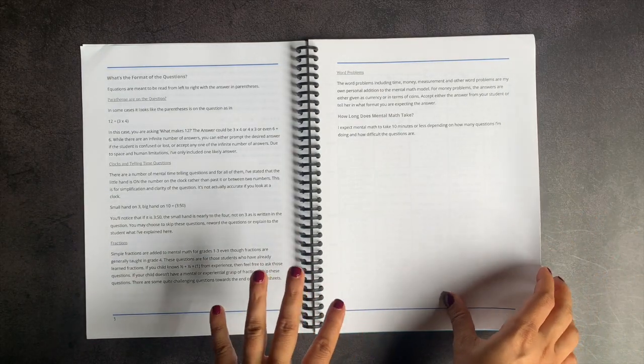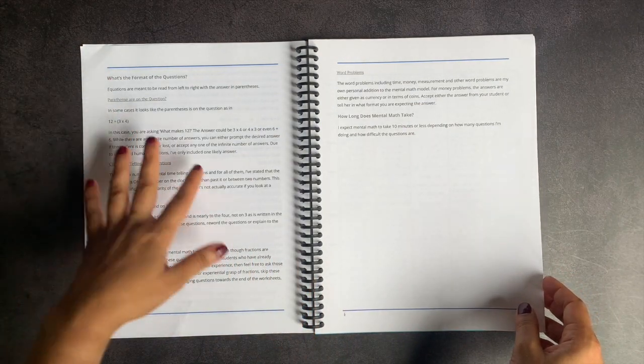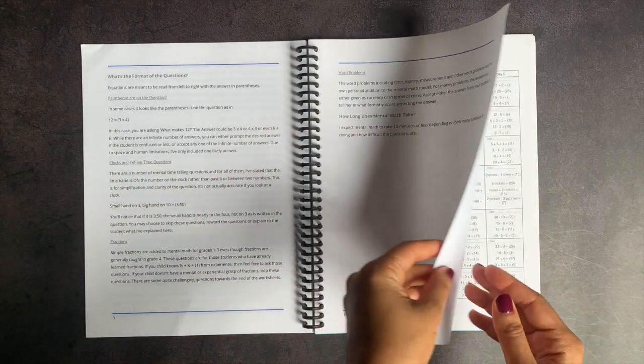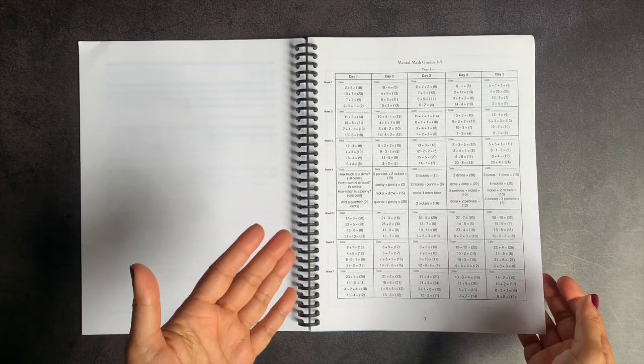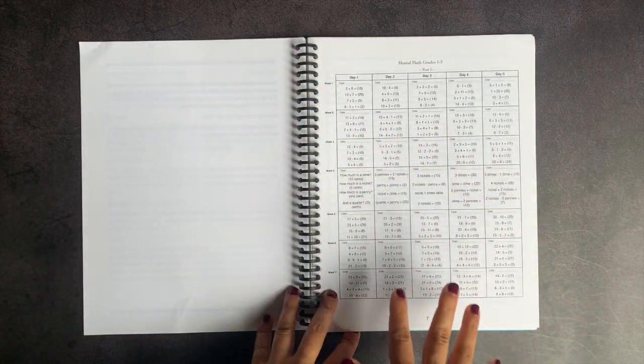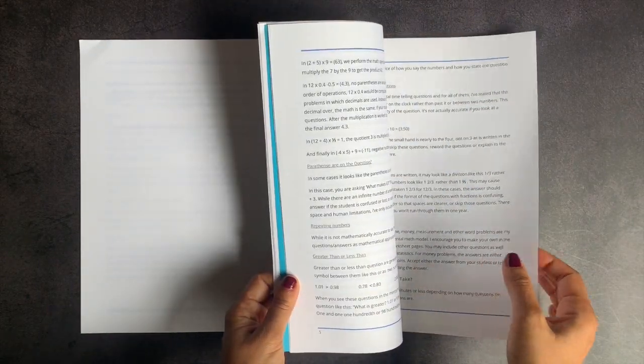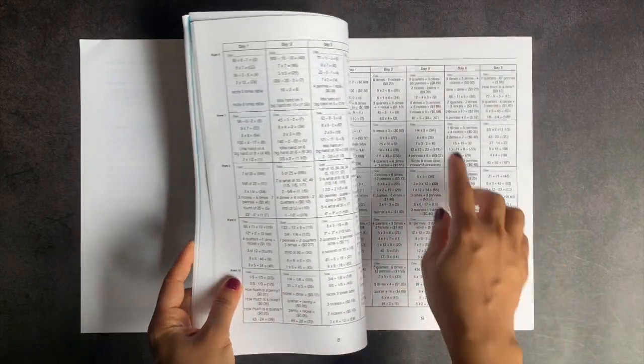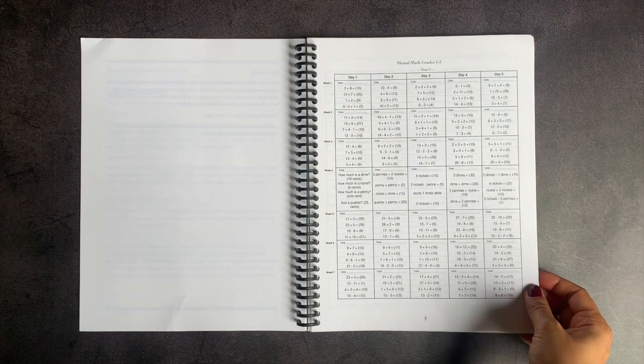The questions in here include multiplication, times and clocks, you have fractions, you have addition, you have word problems, you have money problems. She really does have a variety of problems for you. The format that you see here continues throughout whether it's the grades one through three system or the higher grades, because you have days one through five here, as you can see, and the weeks are listed down the columns.